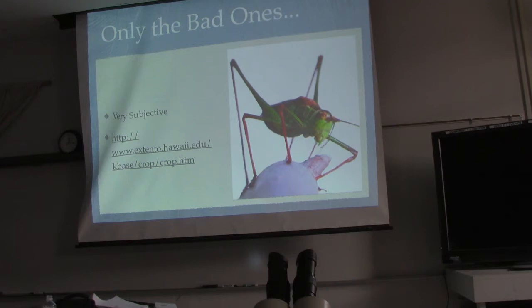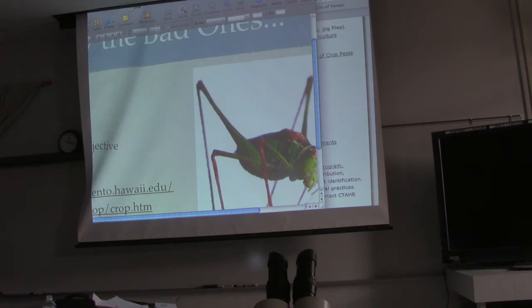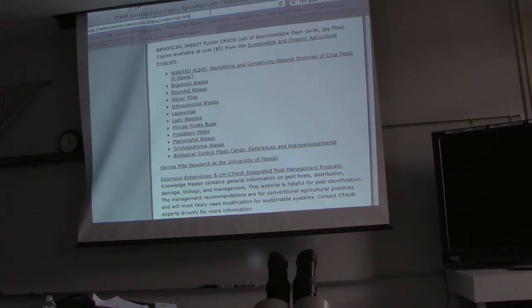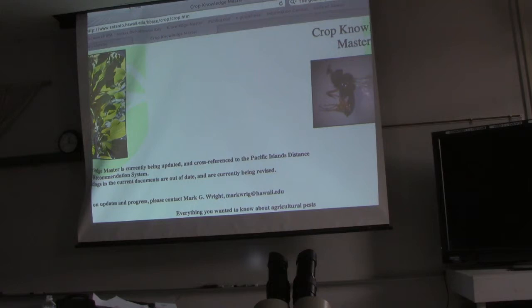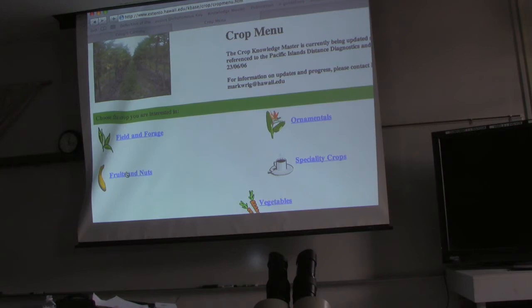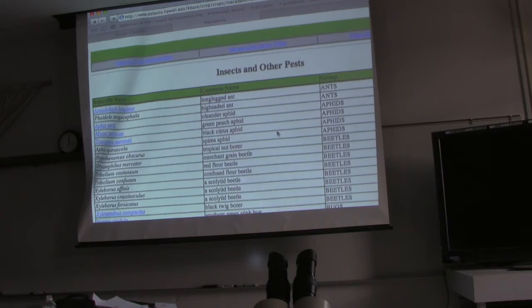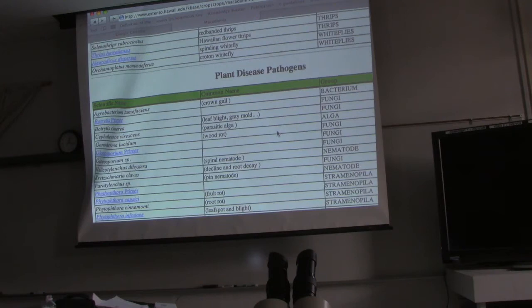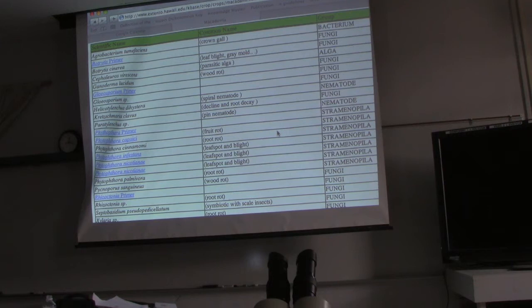Only the bad ones — be very selective. This is the Knowledge Master I showed you in the last class. It allows you to do pest searches by crop, by pest type, or by scientific name. It gives you a chance — like, what would be the common pests found in macadamia nuts? It's a lot — disease pathogen problems. You can go to this website if you find you have any of these, to help identify the bad insects. Do your research. Don't just go out spraying stuff.